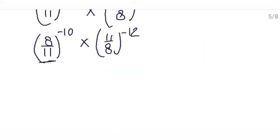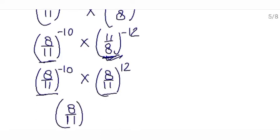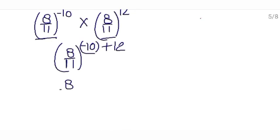Here the bases are different — this is 8 upon 11 and this is 11 upon 8 — so firstly we will make the bases same. This is 8 upon 11 raised to the power minus 10. Write its reciprocal: its reciprocal will be 8 upon 11 raised to the power positive 12. Now the bases are same, so write the base once and add the powers because we are multiplying them: minus 10 plus 12.